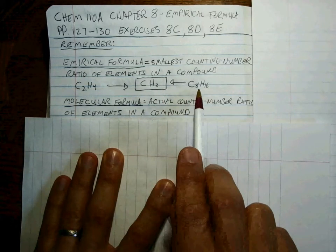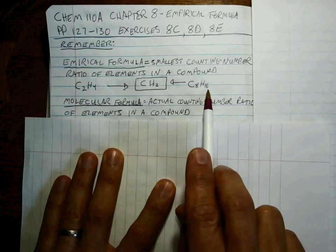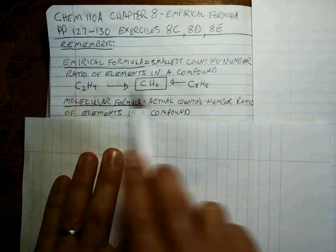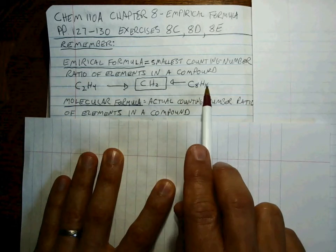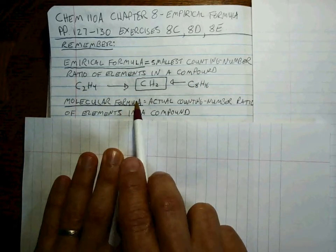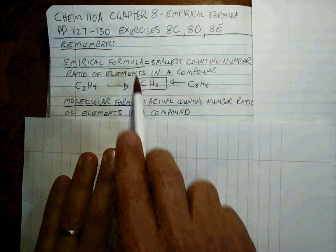And then if we look at this molecule, C8H16, that has the same empirical formula as this one because the smallest ratio is one carbon to two hydrogens. These would be the molecular formulas, but that would be the empirical formula.